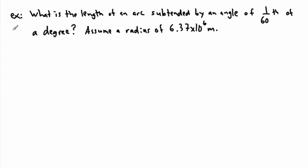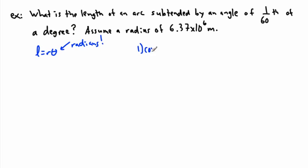We can actually do an example. We can say: what's the length of an arc subtended by an angle of 1/60th of a degree? Now the issue is we've got to convert first, because we've been given something in degrees. I want to use L equals R theta, but theta has got to be in radians — they're being sneaky here. So step one is convert to radians.